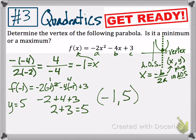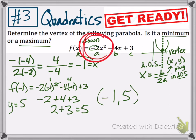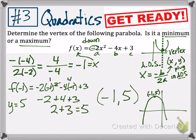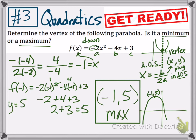But the problem also asks whether this is a minimum or maximum. Because a equals negative 2, we have a negative value for a, which tells you the parabola opens downward. Because the parabola opens down, the vertex at negative 1 comma 5 is at the top of the parabola, making it a maximum — that is the final answer.